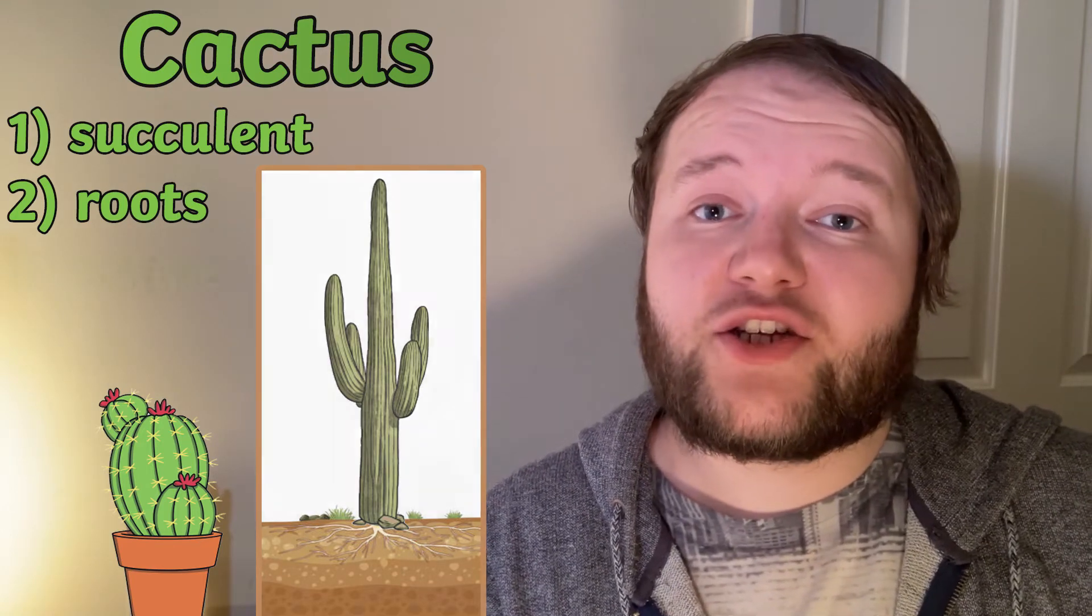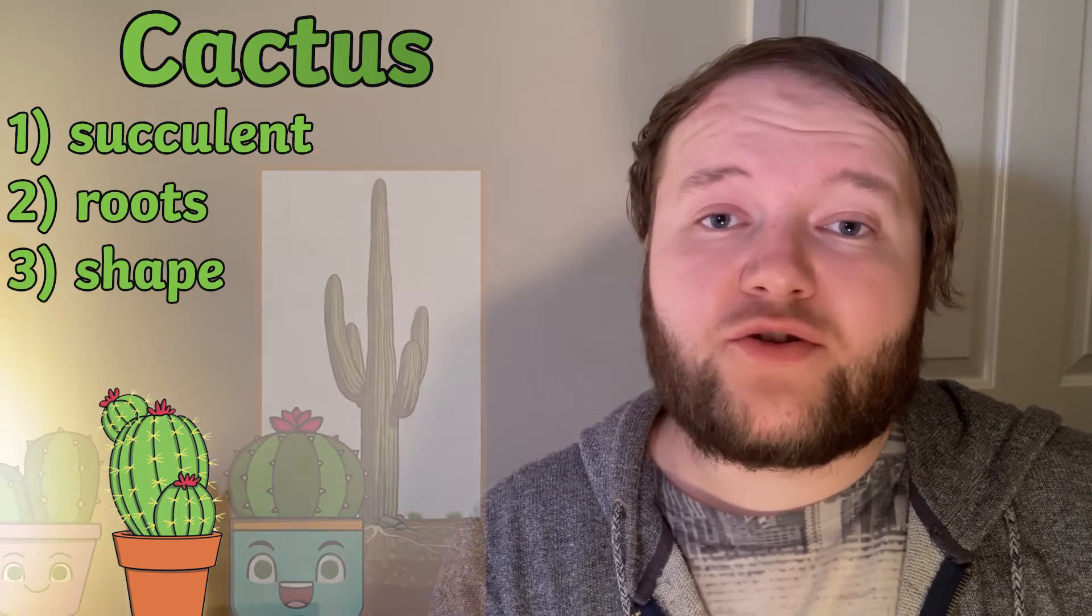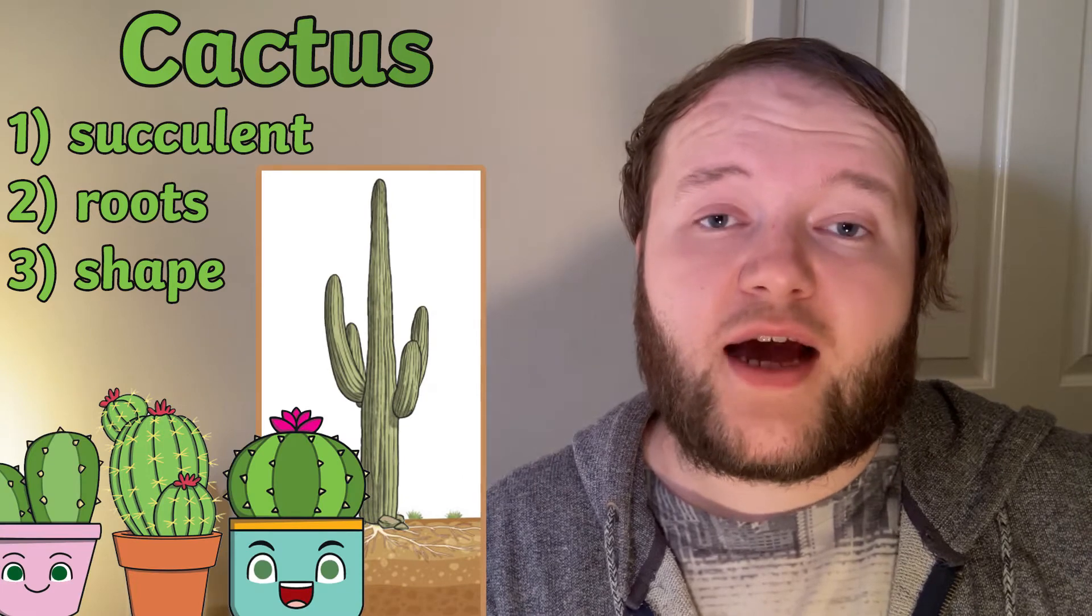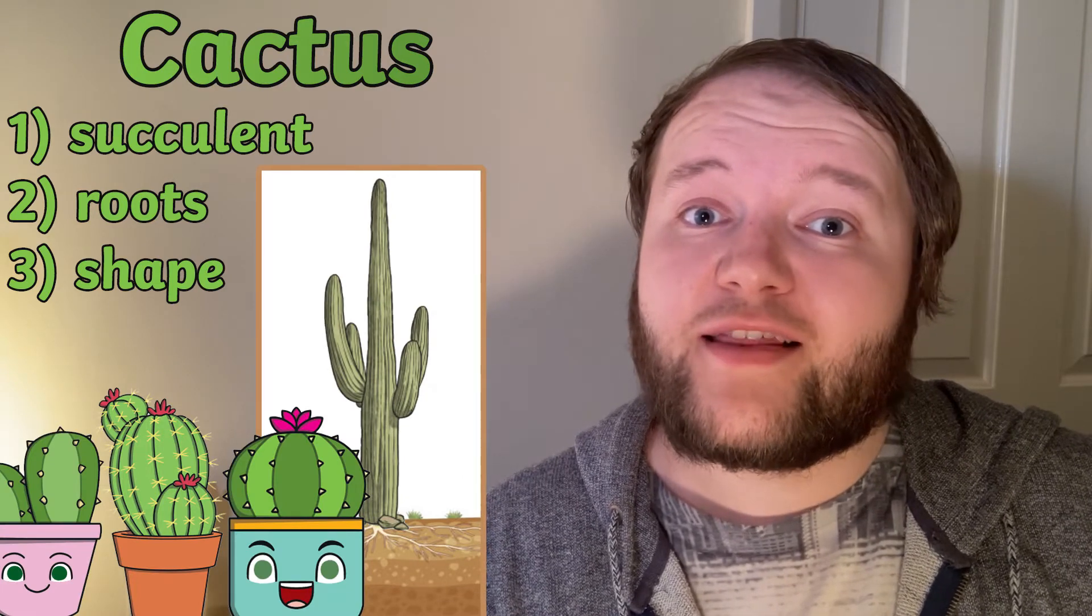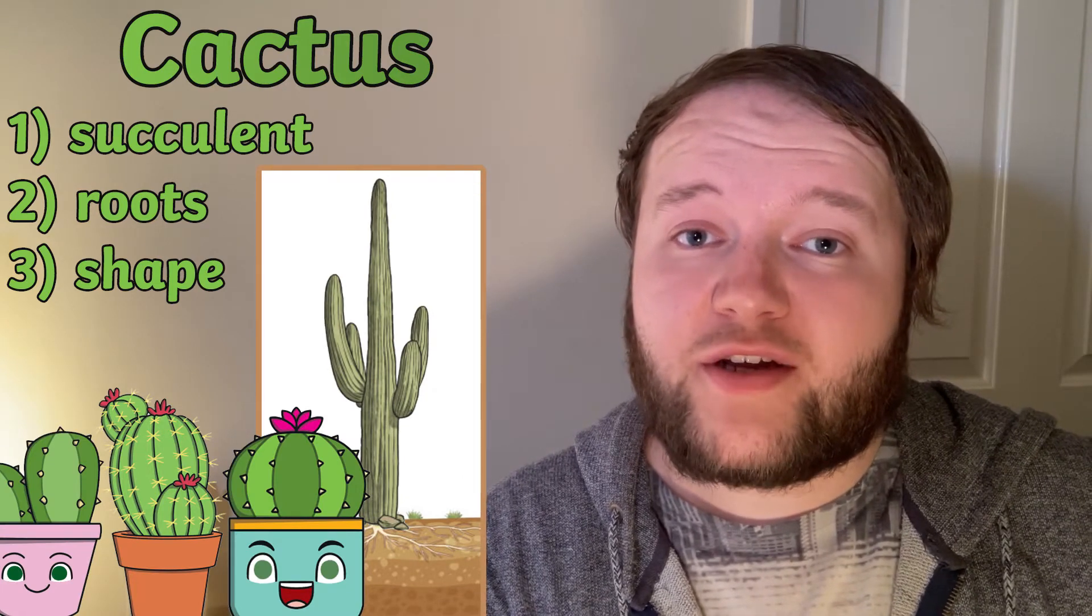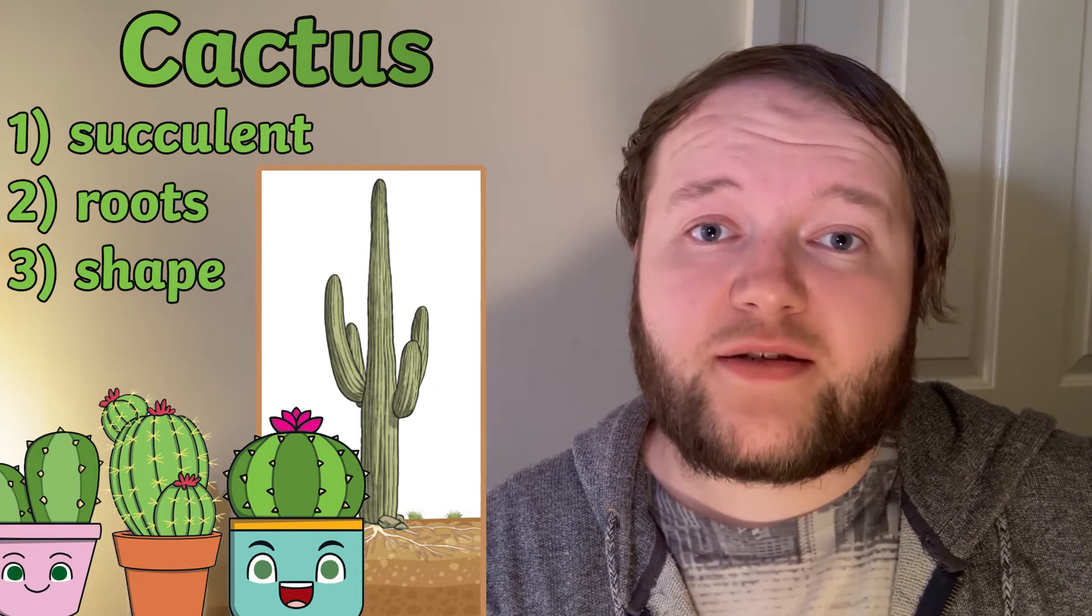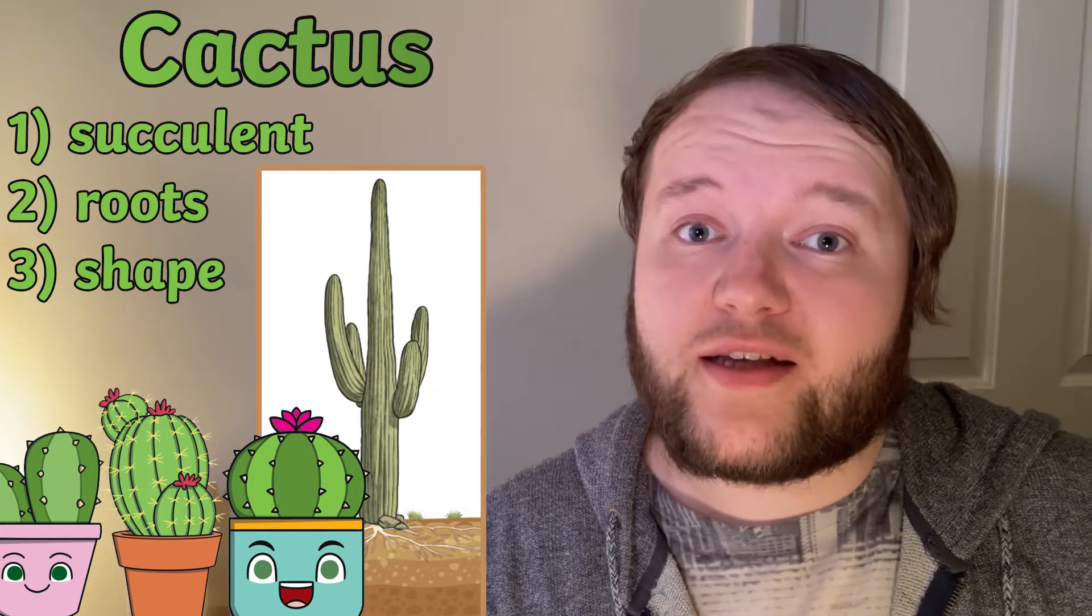The third adaptation is the shape of a cactus. Cylindrical and spherical shapes have a lower surface area. This lowers the rate of evaporation, again allowing the cactus plant to keep as much water as possible.